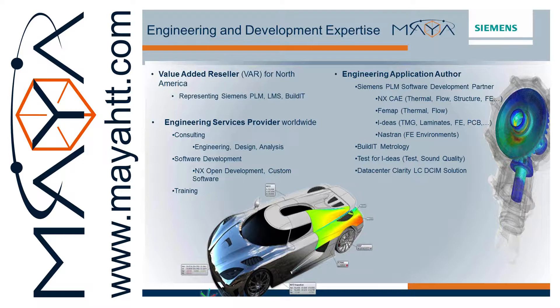Maia has developed a new software package called Clarity, which automates data center infrastructure management, allowing IT and facility operators to manage in real-time assets, including hundreds of servers and power distribution units, work orders, and workflows involving multiple parties. Clarity includes real-time monitoring, alarm and event notification, and high-definition asset visualization, and promotes energy efficiency with integrated heating and cooling analysis.